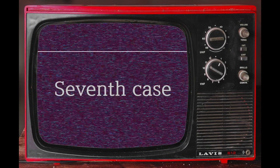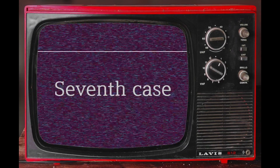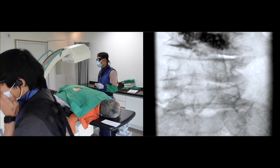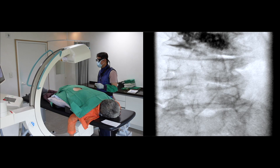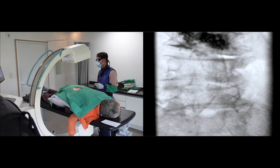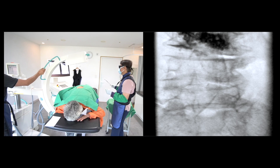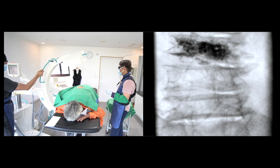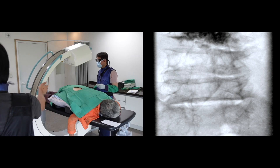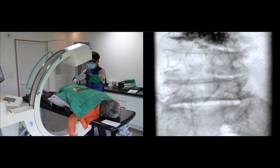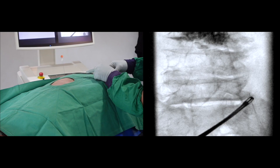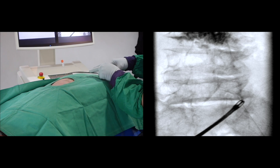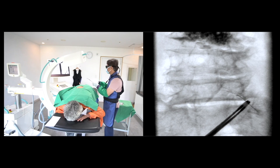Let me present the seventh case — it is a challenging case. My target will be the right L5 and L4 nerve roots. I will show you an ipsilateral lateral oblique view. Osteoporosis, disc space narrowing, and marginal spurs are common features of elderly patients.